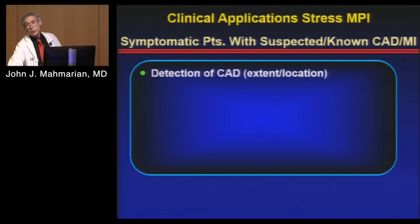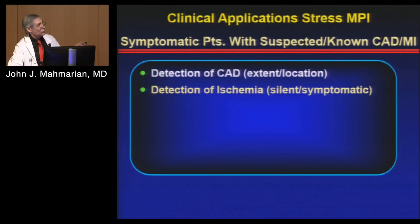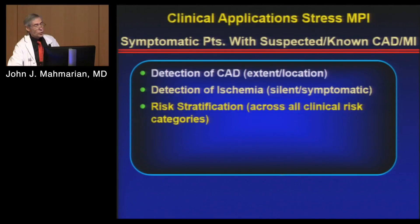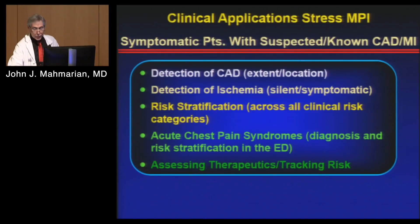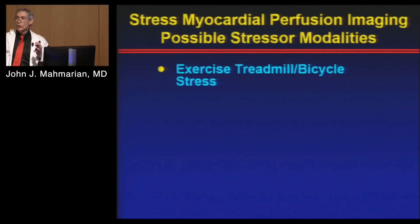Starting with nuclear, the clinical applications are: detection of coronary disease — location and extent — detection of ischemia, risk stratification across all different types of patient populations, evaluation in the ED for acute chest pain patients to assess whether they can go home or need to stay, and assessing therapeutics and tracking risk based on changes in perfusion after giving different therapies.